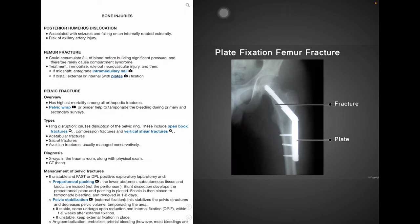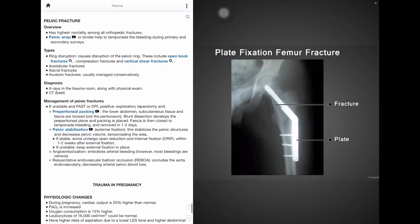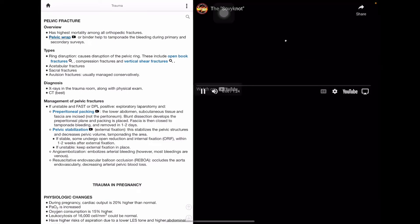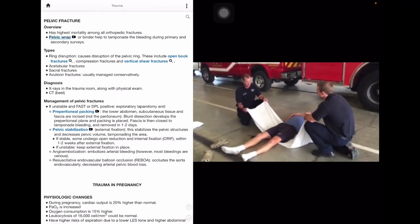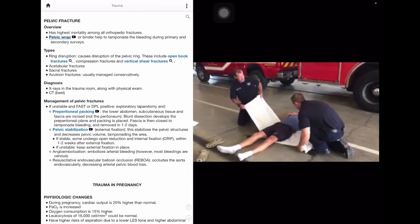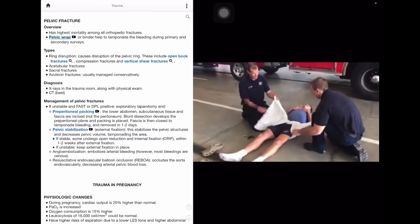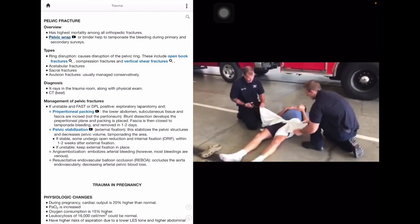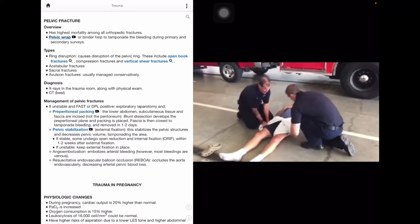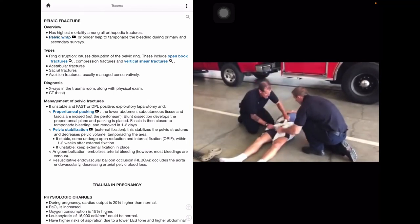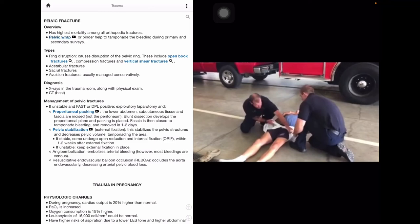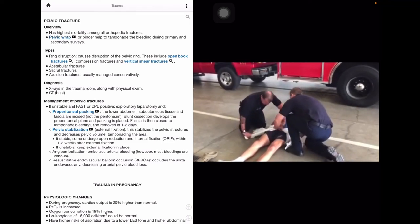We also have fractures of the pelvic region which have the highest mortality among all orthopedic fractures. Pelvic wraps or binders help to temporarily stop the bleeding so that primary and secondary surveys can be performed. And there is a video attached here where you can press that to see more on pelvic wrapping. So we have four types of pelvic fractures, ring disruption, acetabular fractures, sacral fractures, and avulsion fractures. Ring disruption causes disruption of the pelvic ring and encompasses open book fractures, compression fractures, and vertical shear fractures. Regarding avulsion fractures, management is usually conservative. And x-rays or a physical exam or a CT, which is the preferred best method, is used to diagnose pelvic fractures.